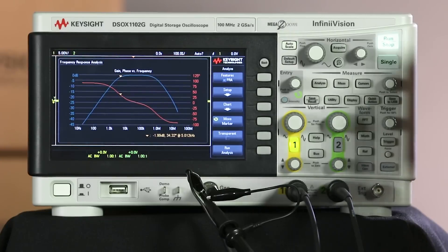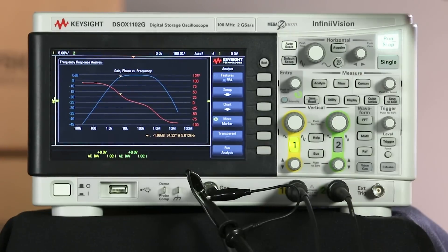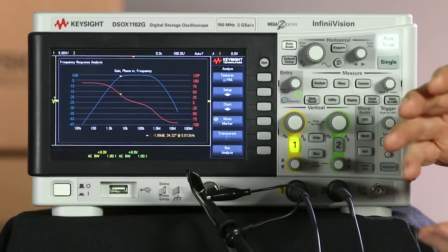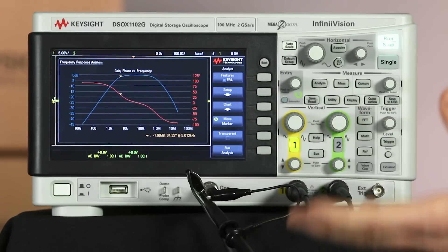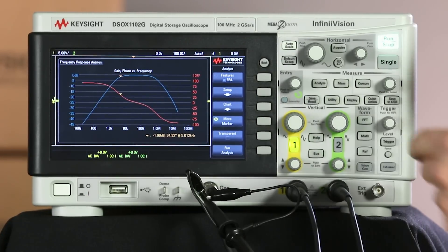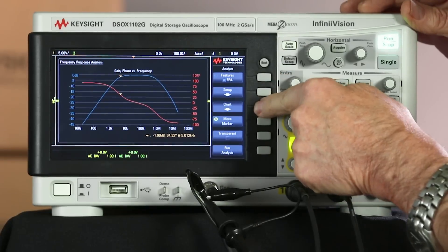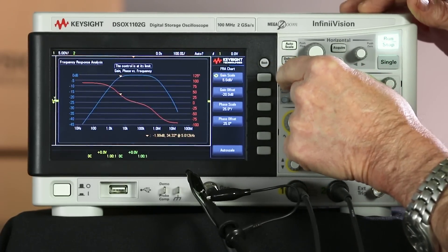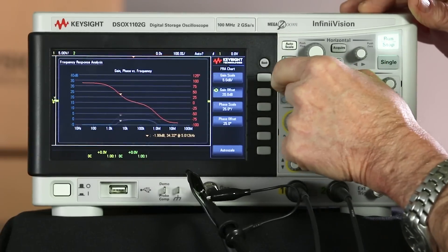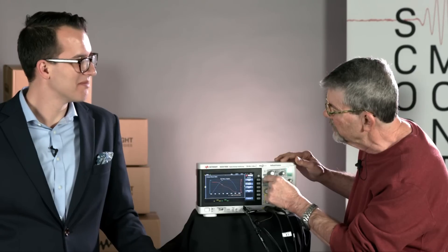It also auto scales the scaling of both the gain and phase plot at the completion of the test. So it's giving you optimum scaling, but you can manually change it. If I go into the chart, I could select gain scale and change that or gain offset. And then I could do the same thing with the phase plot as well.